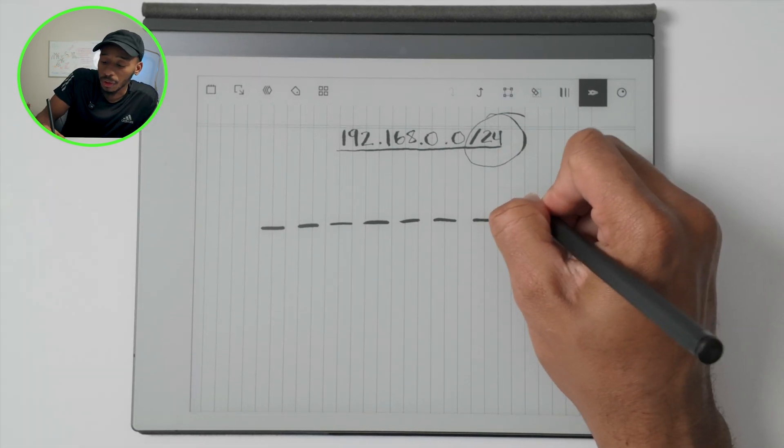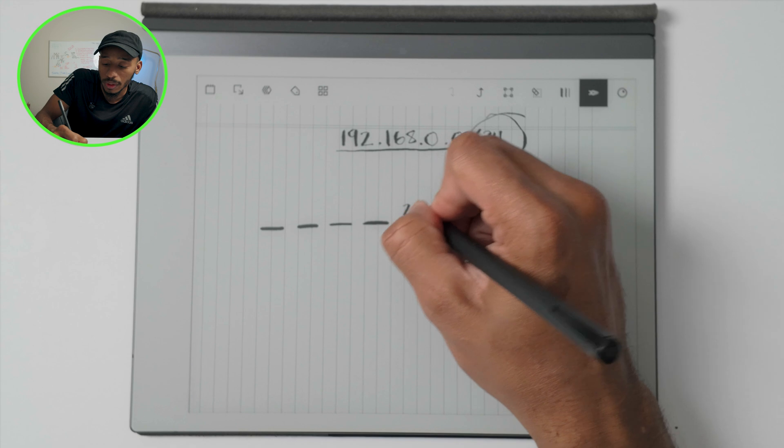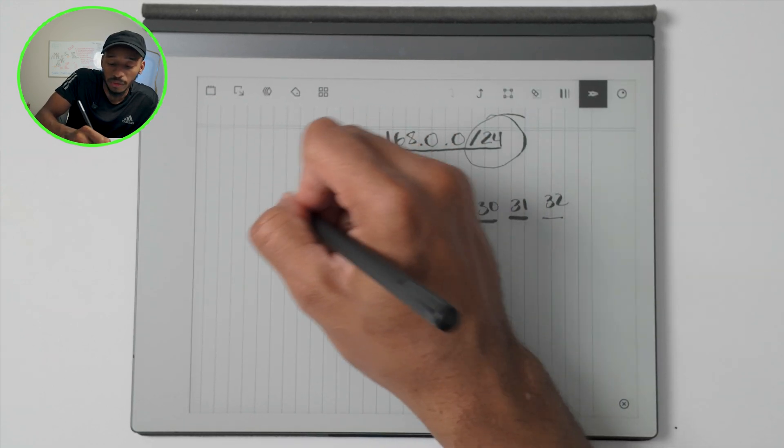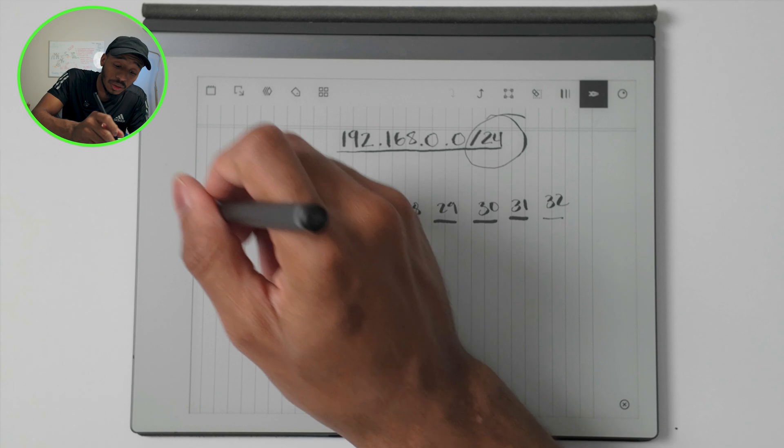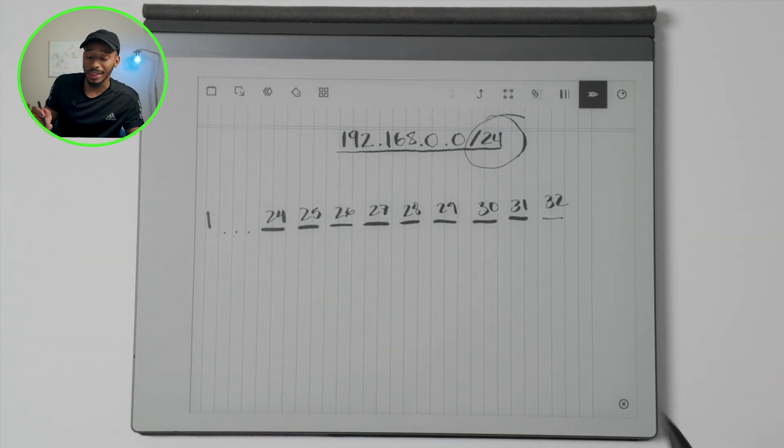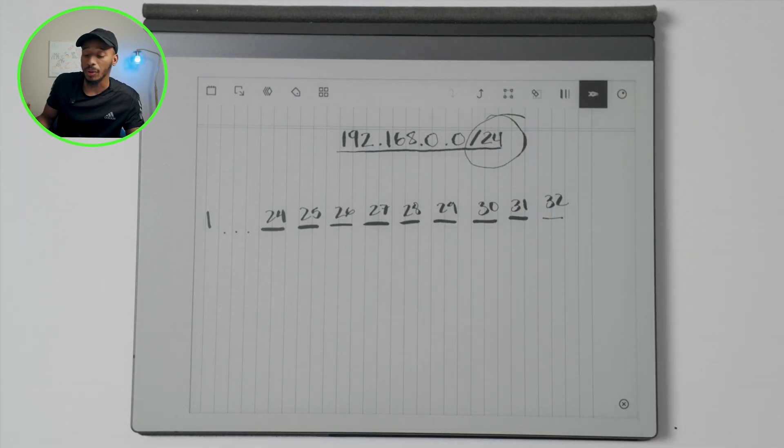So this will be 31. This would be 30. This would be 29, 28. You get the idea: 27, 26, 25, 24. And really you could do that all the way down to number one, but we're going to stop at 24 in this case, since that's all we need in order to get to the value of the total number of host addresses on that network.